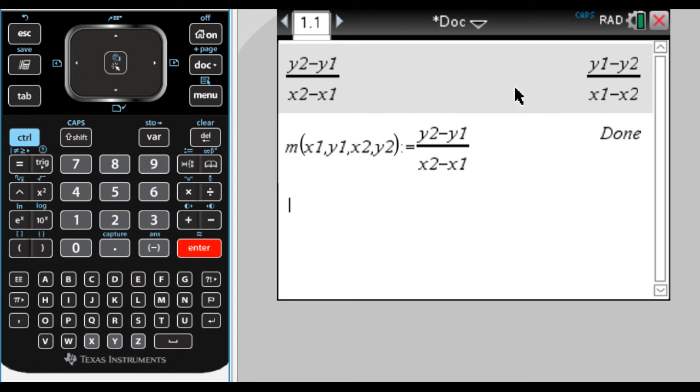So done means that it's now a function. So I can type m of, I don't know, 1, 2, comma, 3, comma, 4. So what I'm doing here is I'm finding the slope between the point 1, comma, 2 and 3, comma, 4. So if you think about it, the change in y should be 4 minus 2, so 2 over the change in x is 3 minus 1, which is 2. So I should just get 1 here, which is fine.